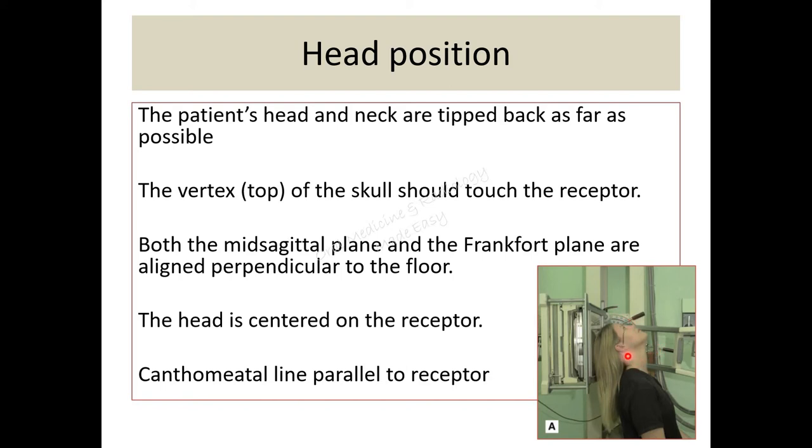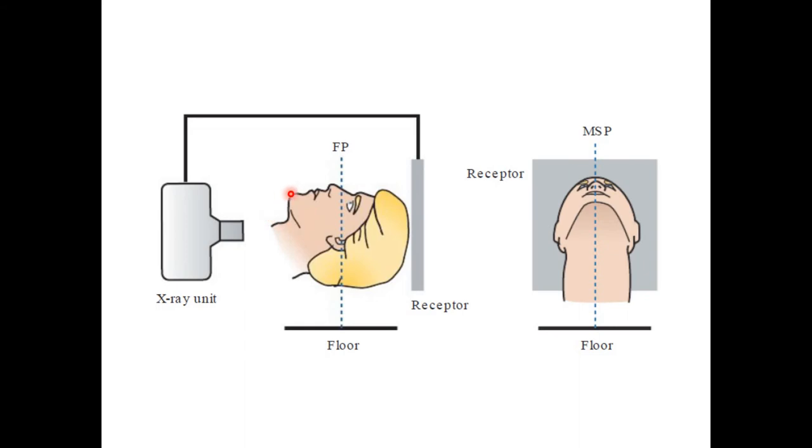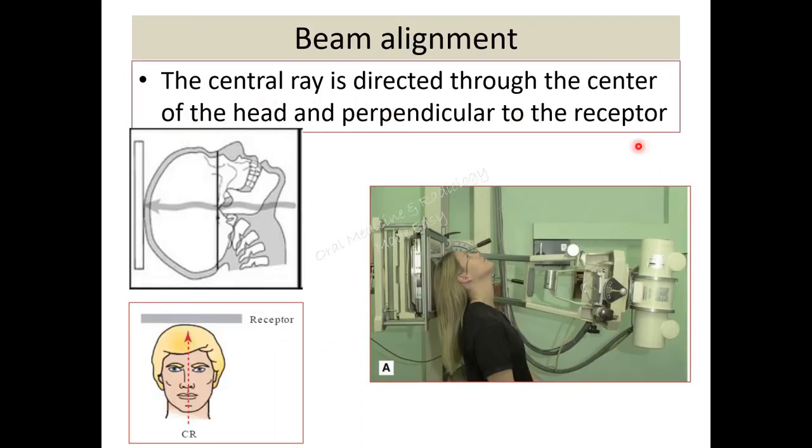This is the canthomeatal line. It should be parallel to the receptor. Here you can see the head is tipped backwards as much as possible and the Frankfurt plane should be perpendicular to the floor.